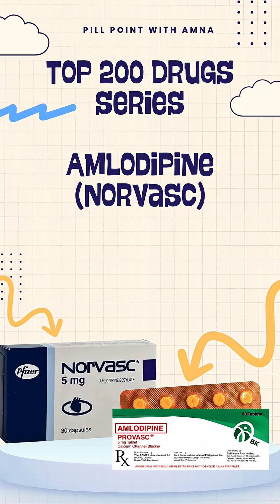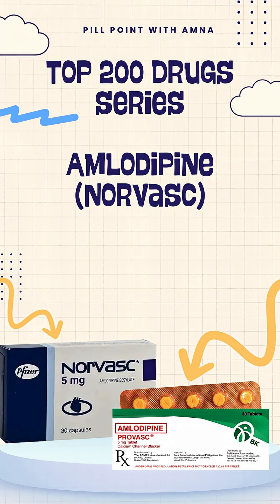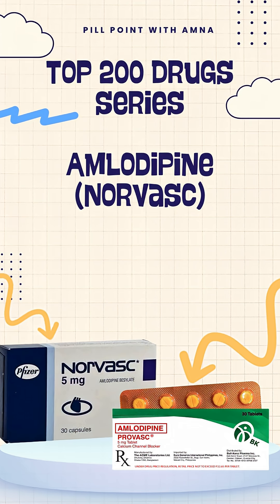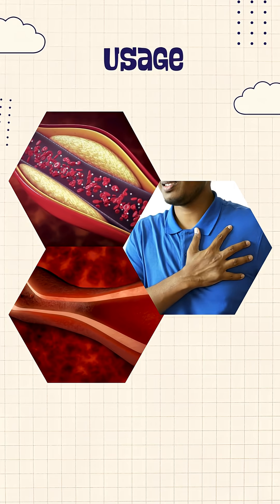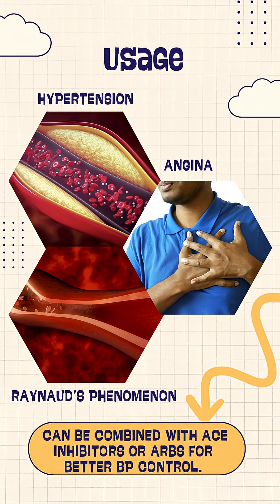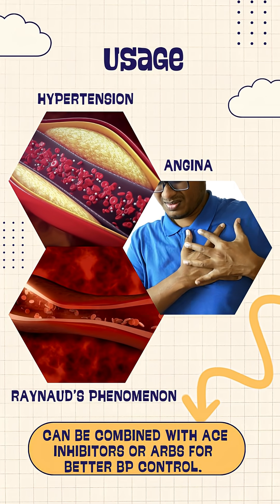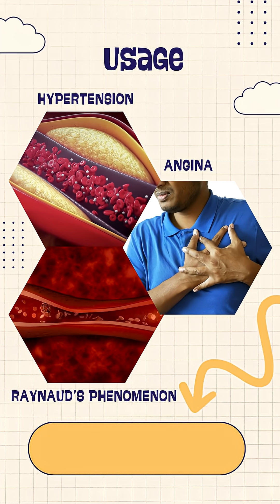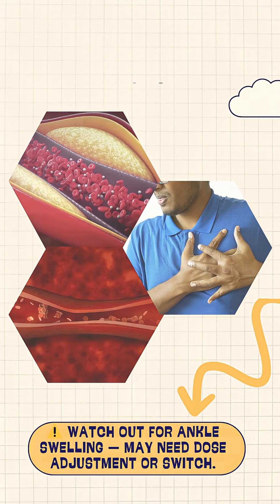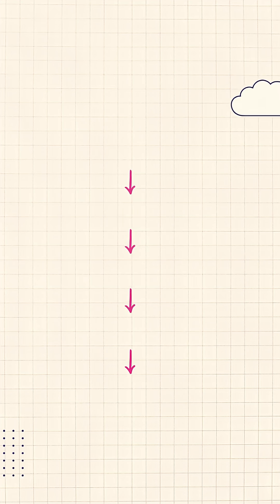What blocks calcium, widens arteries, and prevents chest pain? It's in the top 200 drugs — it's amlodipine. Amlodipine is used for the treatment of hypertension, angina, and some cases of Raynaud's phenomenon. It can be combined with an ACE inhibitor or angiotensin receptor blocker for better control.